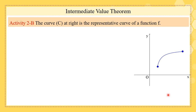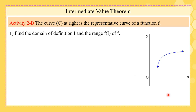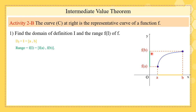Activity 2b: we have a curve and need to find the domain of definition and range of the function. The domain is the closed interval [a, b]. Since f(a) and f(b) are the endpoints, the range is the green segment [f(a), f(b)]. This occurs because the curve is strictly increasing and continuous, so we apply f(a) and f(b) to get the closed interval range.